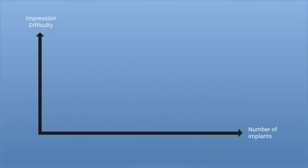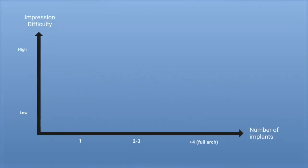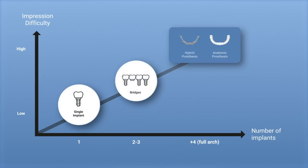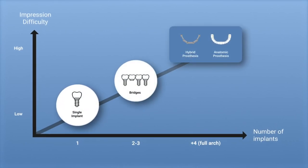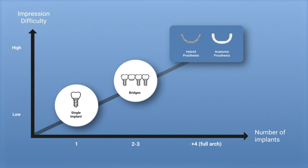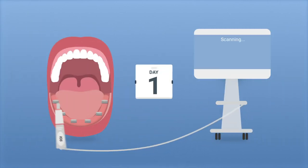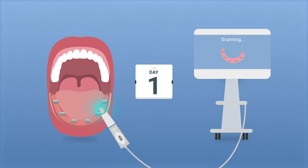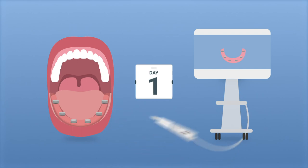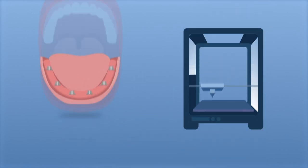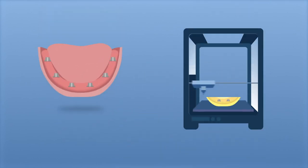In implant rehabilitations, the difficulty of taking a precise impression increases with the number of implants to be captured and their angulations. In multiple implant cases, the process is complex because the reliability of each step depends on the previous one, and 3D printers and scanners have accuracy limitations.